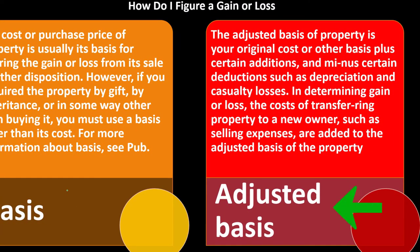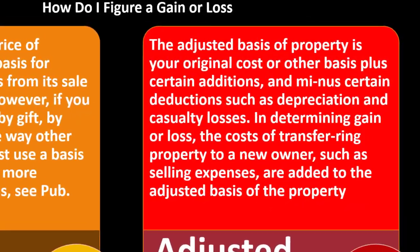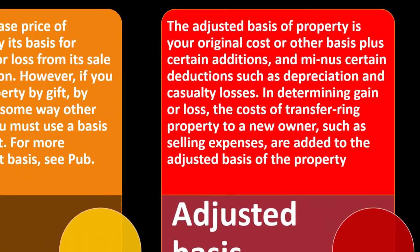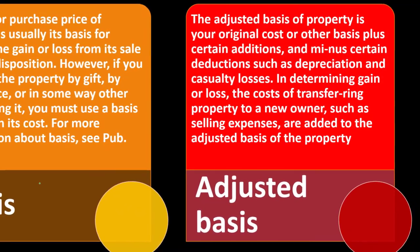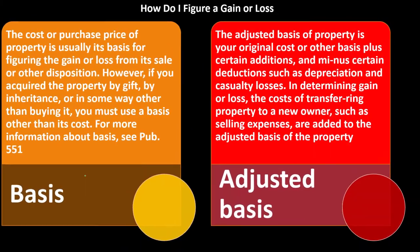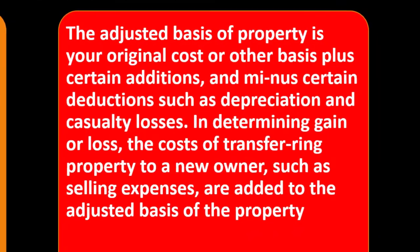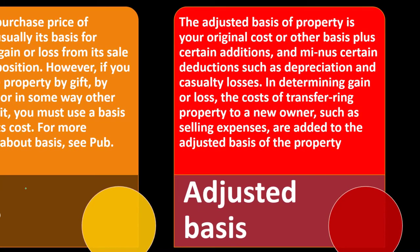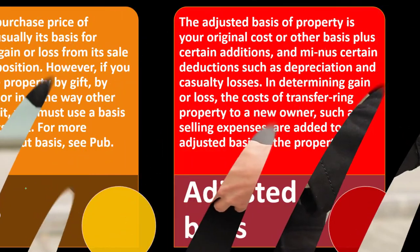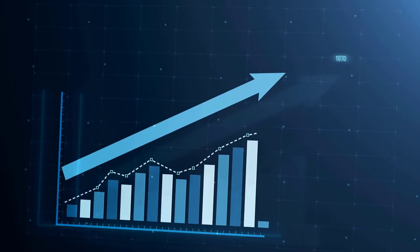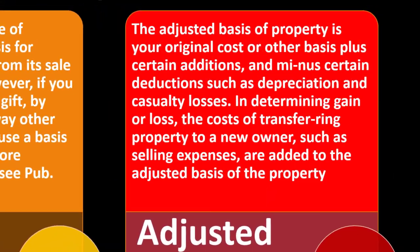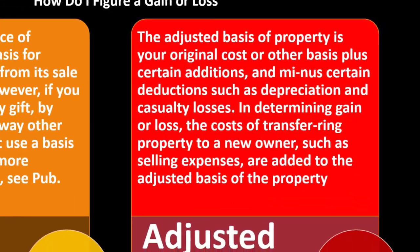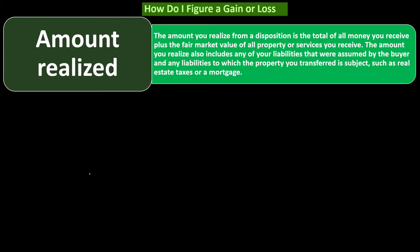Adjusted basis: your adjusted basis is your original cost or other basis plus certain additions and minus certain deductions such as depreciation and casualty losses. Depreciation — the allocation of cost you're getting the benefit from — reduces your adjusted basis, making a gain more likely at sale. Gains are bad for taxes because you'll owe taxes on them. Also, the cost of transferring property to a new owner, such as selling expenses, is added to the adjusted basis, which increases basis and reduces your taxable gain.